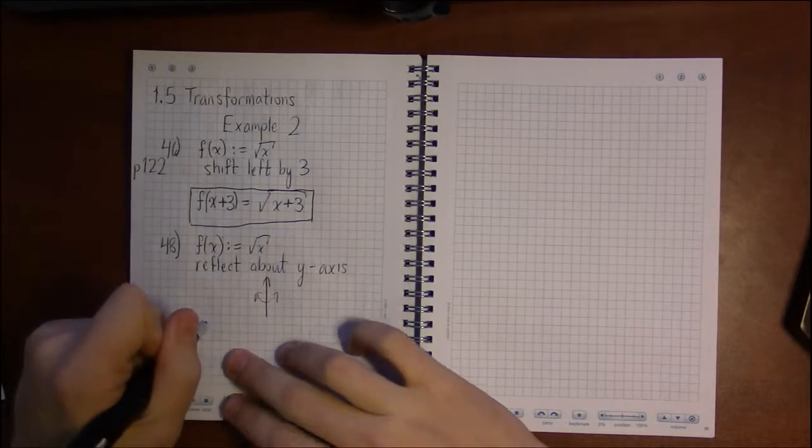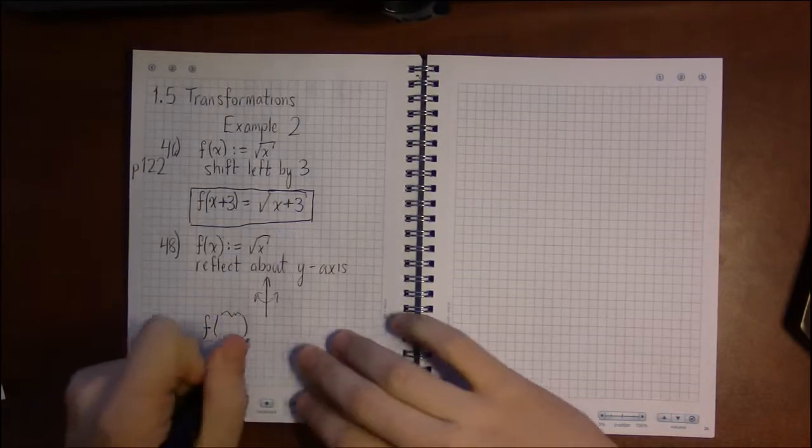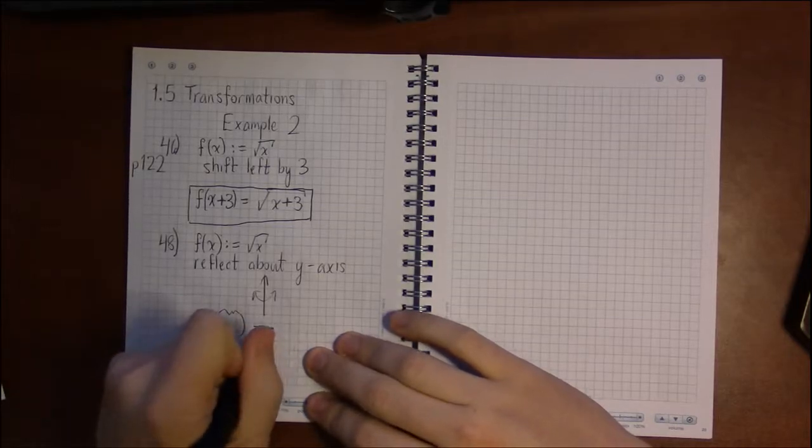So with a horizontal reflection, we're going to be operating inside the parentheses here. We're going to be operating on x.